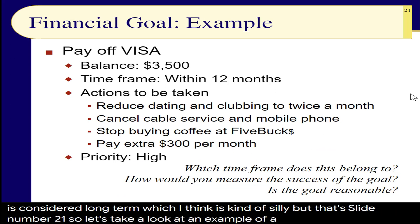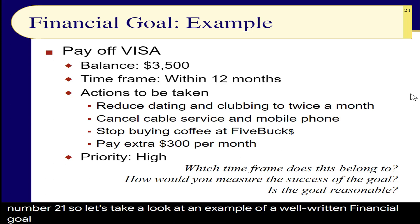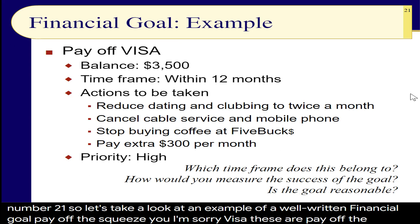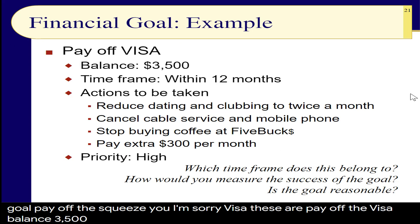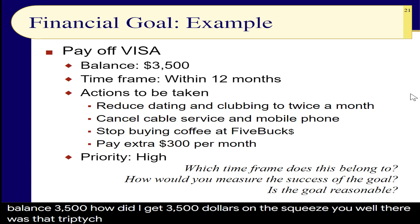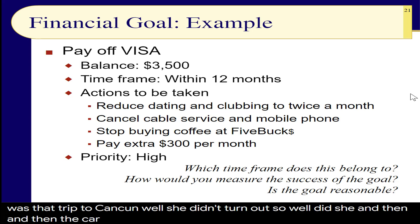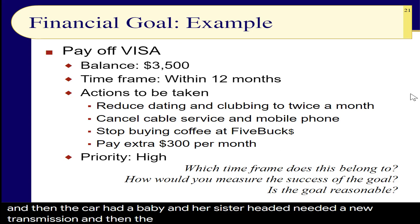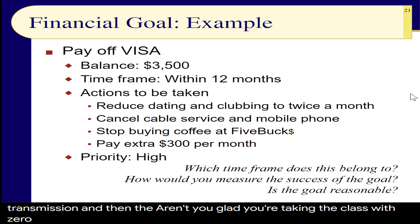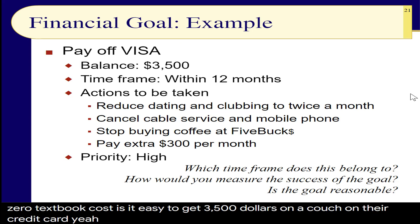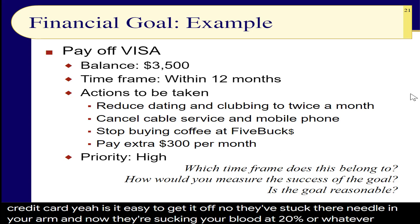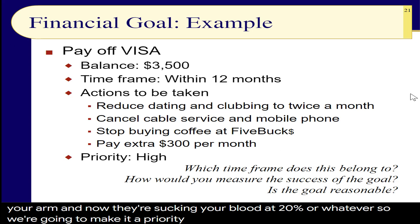Slide 21: let's look at an example of a well-written financial goal. Pay off the Visa balance of $3,500. How do you get $3,500 on a credit card? There was that trip to Cancun, the car needed a new transmission, and then the books — so expensive. Is it easy to get $3,500 on a credit card? Yes. Is it easy to get it off? No. They've stuck their needle in your arm and now they're sucking your blood at 20% or whatever. So we're going to make it a priority to get this paid off.